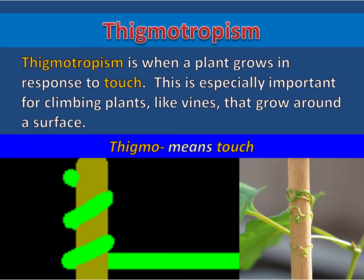Thigmotropism is when a plant grows in response to touch. This is especially important for climbing plants, like vines, that grow around a surface.